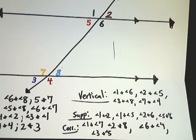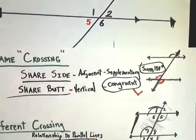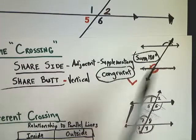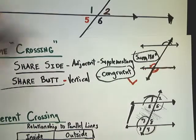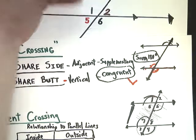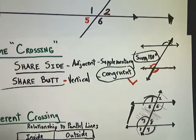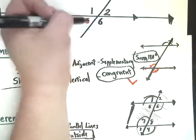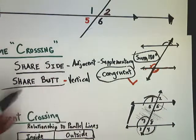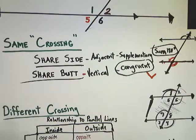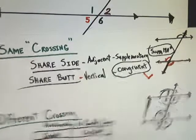If angles are on the same crossing: if they share a side they are supplementary, so you set up the equation angle + angle = 180. If they share a butt they are vertical angles and therefore congruent — set them equal to each other. Now if they are on different crossings, we use a method called Butt-Zorro-Butt.